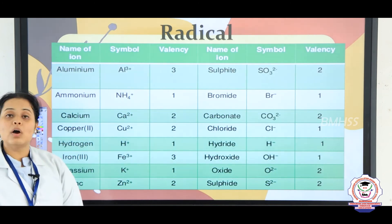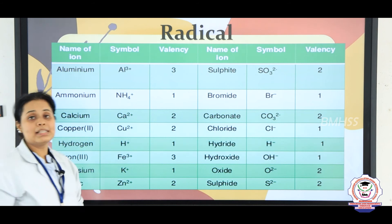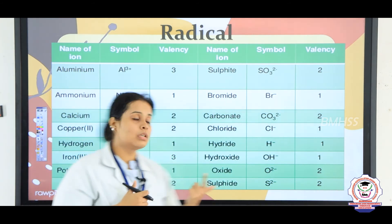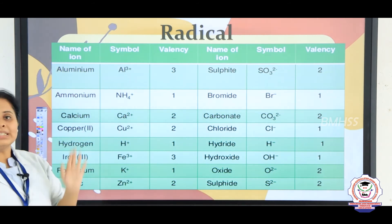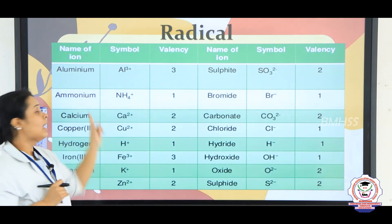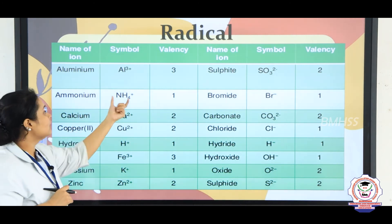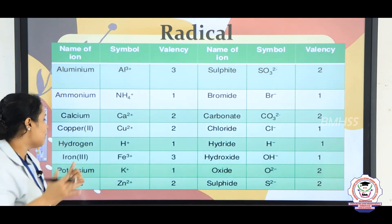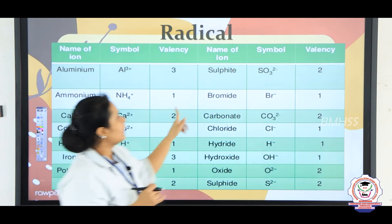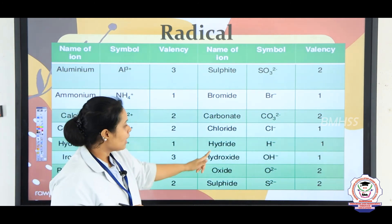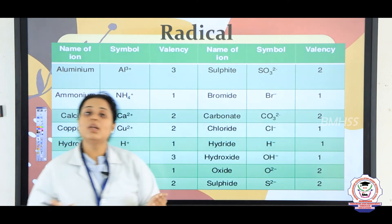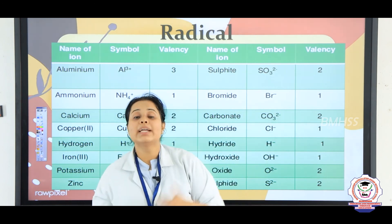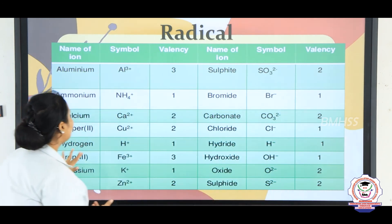Now let us see the topic of radicals. A radical means it is a combination of two different types of atoms or elements. For example, aluminum is a normal single element, but ammonium is NH4+ — it has a valency of plus one. Examples of radical ions include carbonate, sulfide, and hydroxide. Generally, names like sulfates, hydrates, or oxides are examples of radicals.